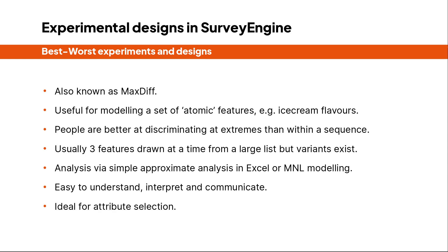Best-worst experiments are a great way of identifying relevant attributes. Best-worst, also known as max-diff, can quantify the utility of elements of large lists of features. It achieves this by recognizing that while humans have difficulty discriminating within the middle of a list, we're very good at differentiating extremes such as best and worst.